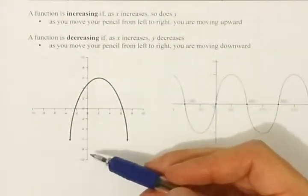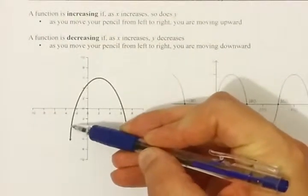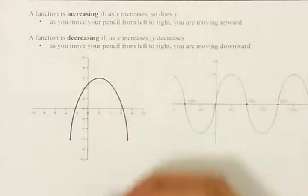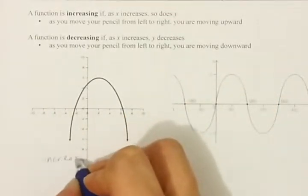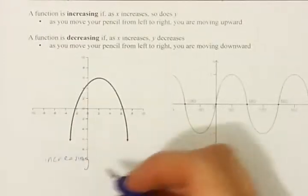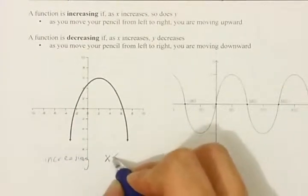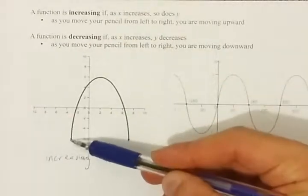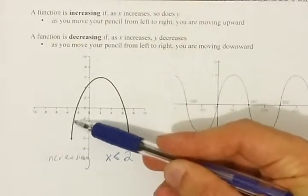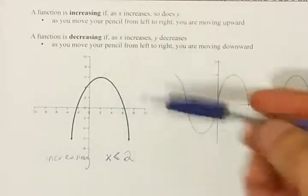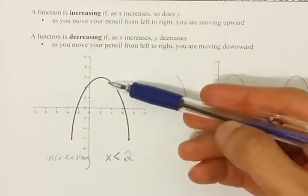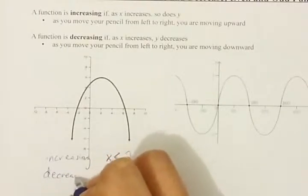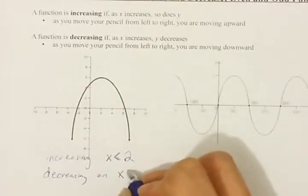This example here, this parabola — if I move my pen from left to right, I'm going upward until about here. That means I am increasing on the whole graph up to 2. Everywhere to the left of 2, this function is increasing. On the other side of 2, as I move left to right, my pen goes downward. So we say the function is decreasing on x is greater than 2.